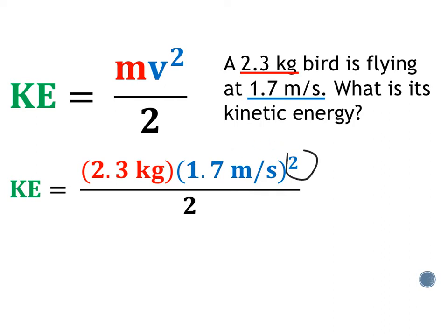And when you take those numbers, you've got 2.3 times 1.7 squared, you get 6.647.